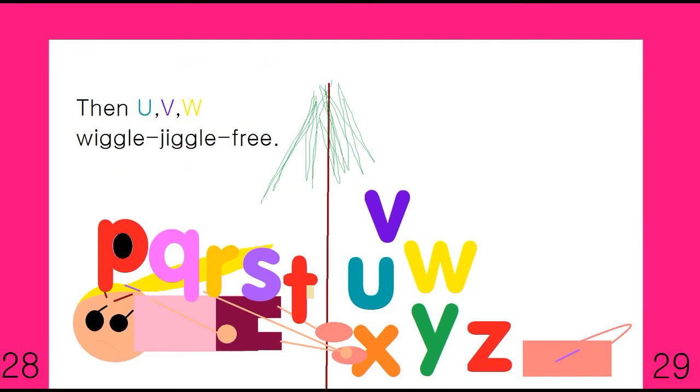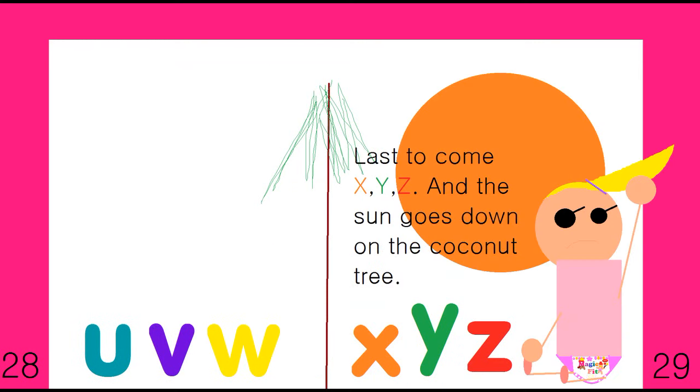U-V-W wiggle-jiggle free. The last to come is X-Y-Z. And the sun goes down on the coconut tree.